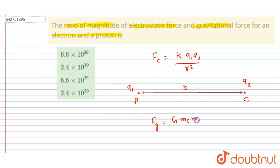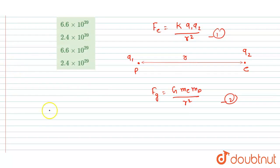So I will write mass of electron into mass of proton by r square. Now we want the ratio of the two, so I will divide equation one by equation two. So from here I will write F_e, that is electrostatic force by gravitational force.